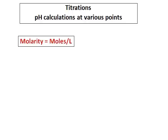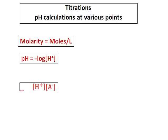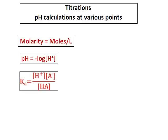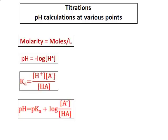You should know what molarity is — that is equal to moles per litre — and pH equals negative log of the concentration of hydrogen ions, and the ionization constant equation Ka, and then the Henderson-Hasselbalch equation: pH equals pKa plus log of the concentration of A minus divided by HA.